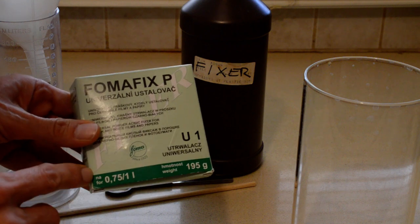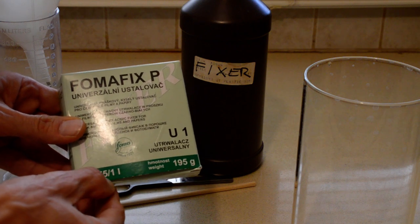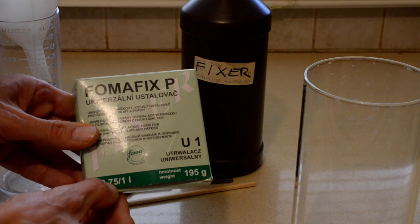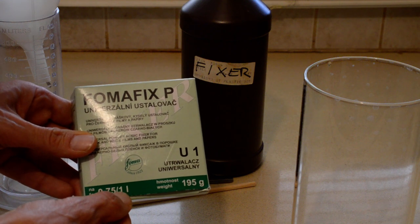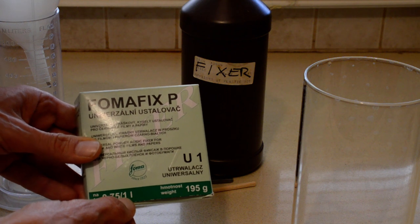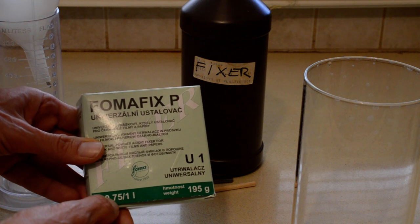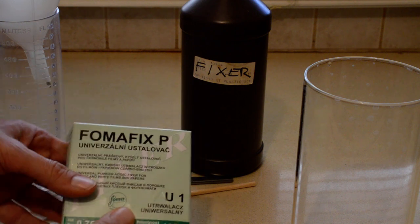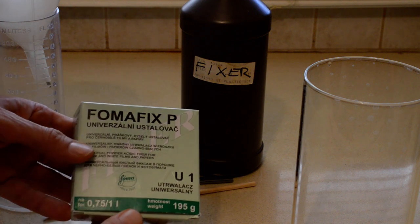If you look on the box of Fomafix, it says 0.75/1 liter. So it's 750 milliliters if you're developing film, 1 liter if you're developing paper. So we're developing film, or I'm going to be developing film with this fixer, so I'm going to be making 750 milliliters of solution. There's no stock solution with a fixer.